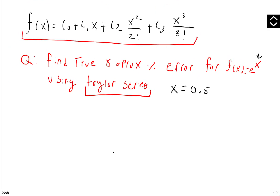The first thing we need to do is write the original function and find the Maclaurin series for it, using the first two terms. So f of x — the first thing you have is e to the x. If you evaluate e to the x at zero, you plug it into your calculator and you get a value of 1.